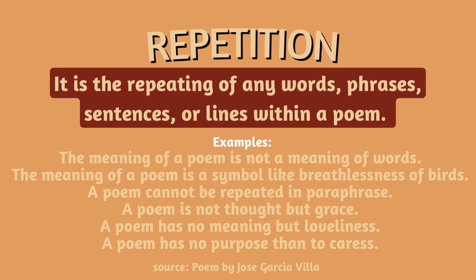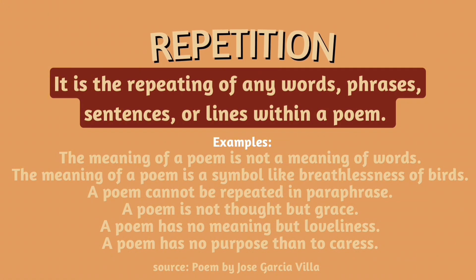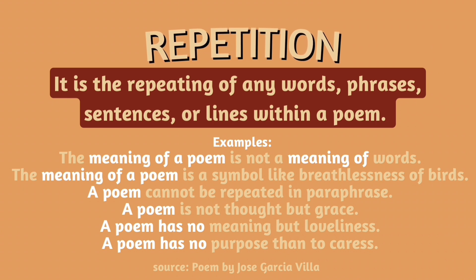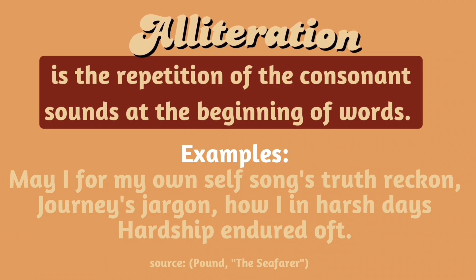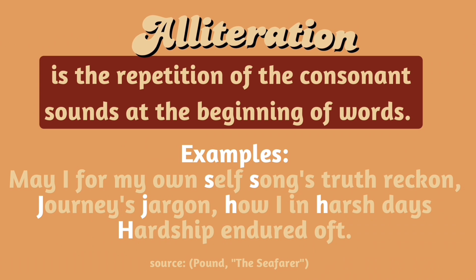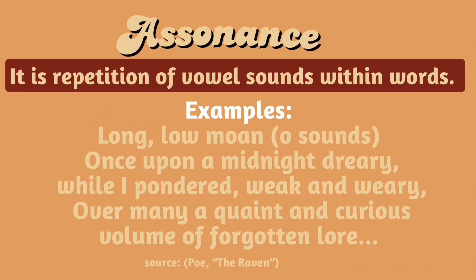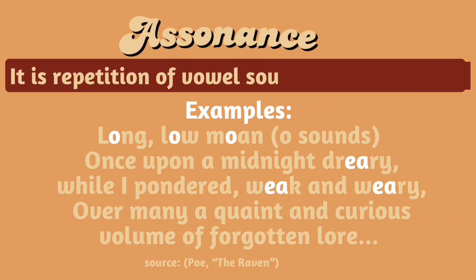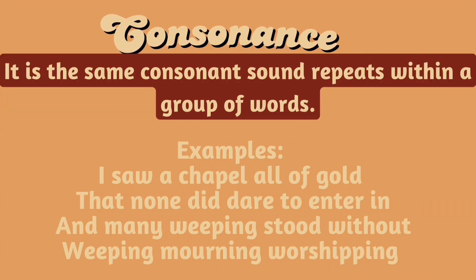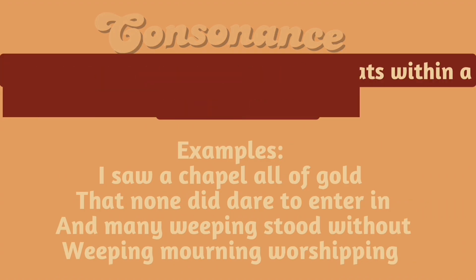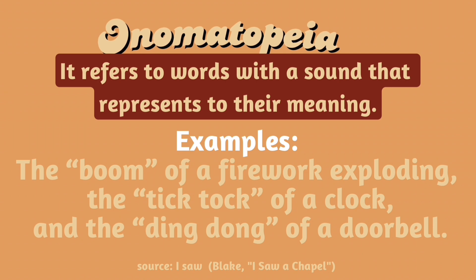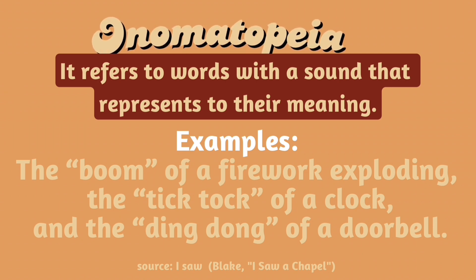Repetition is the repeating of any words, phrases, sentences, or lines within a poem. Alliteration is the repetition of consonant sounds at the beginning of words. Assonance is the repetition of vowel sounds within words. Consonance is when the same consonant sound repeats within a group of words. Onomatopoeia refers to words whose sound represents their meaning.